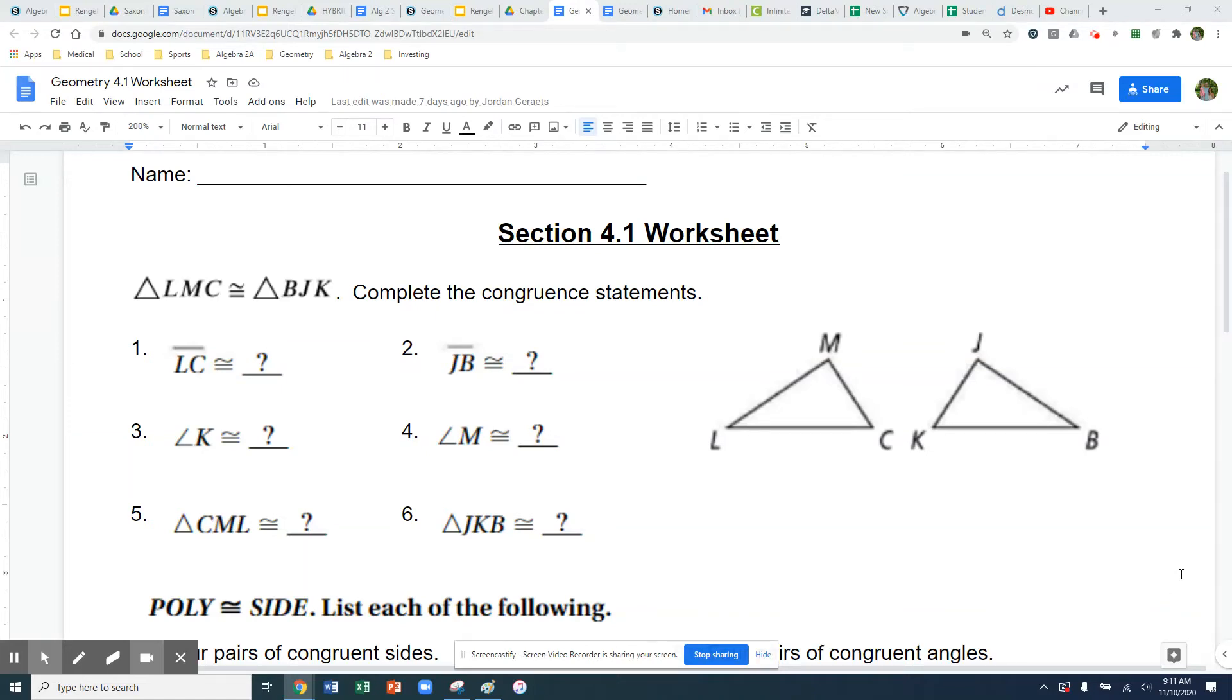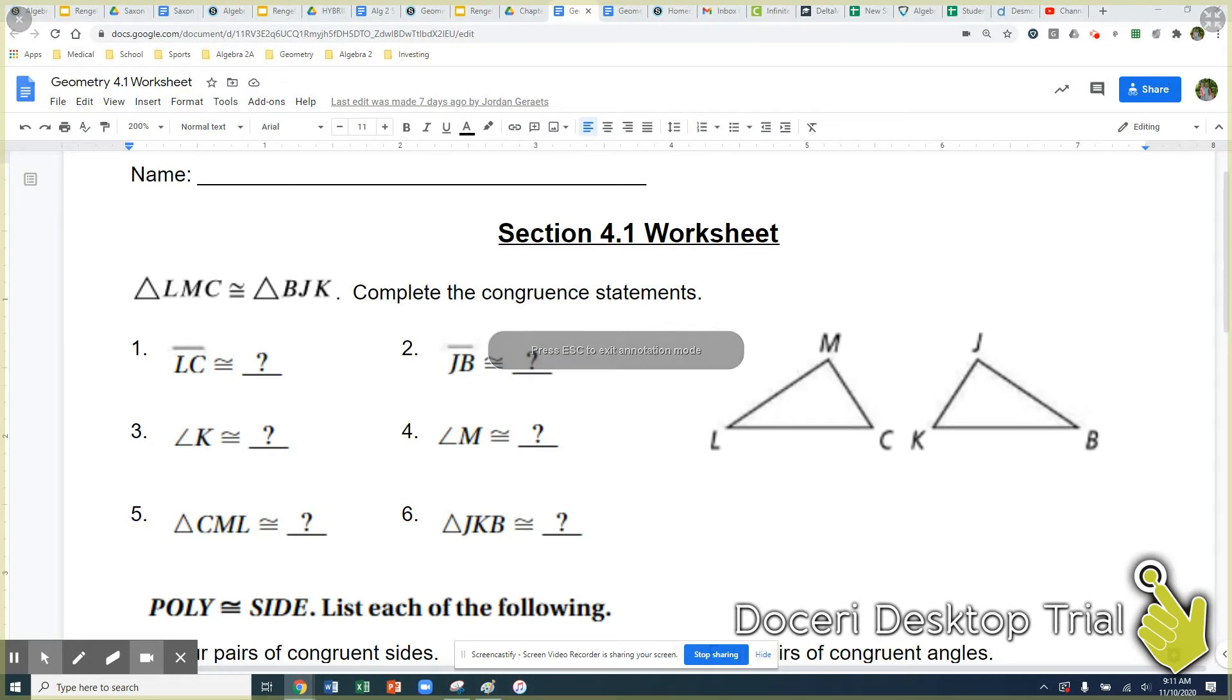So this piece up here is going to be your congruent statement and it says that triangle LMC is congruent to triangle BJK.